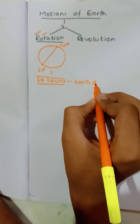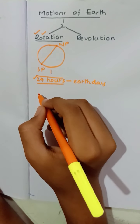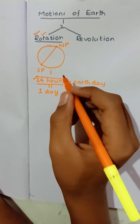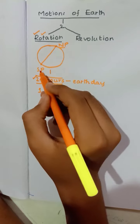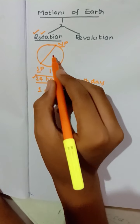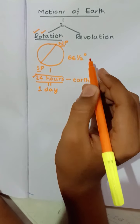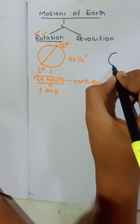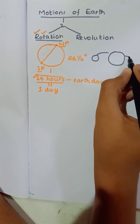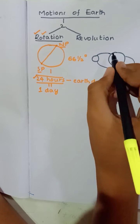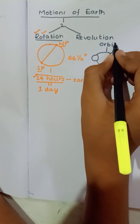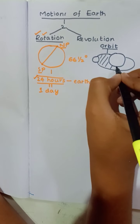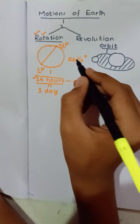On the Earth, 24 hours equals one day, or one Earth day. The axis of Earth, which connects the north pole and south pole, makes an angle of 66 and a half degrees with the orbital plane. The Earth moves around the Sun in a specific path called an orbit, and every planet in the solar system has its own orbit. The plane formed by this orbit is called the orbital plane.